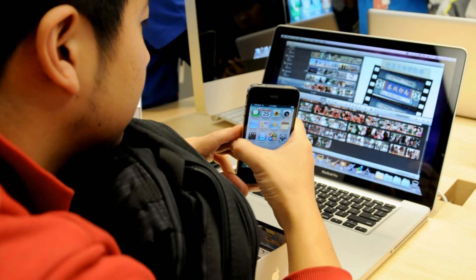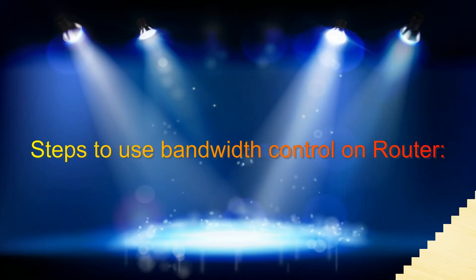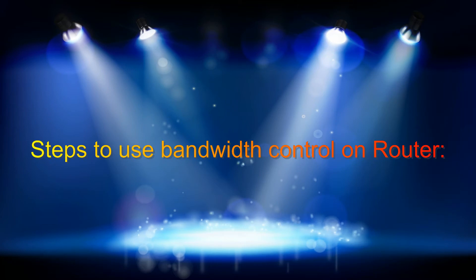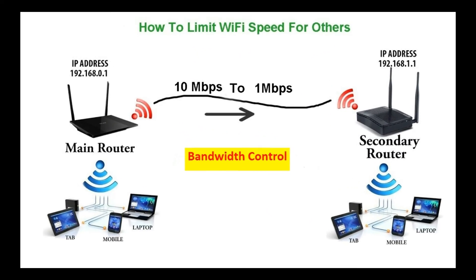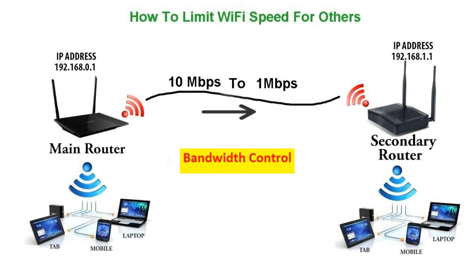When multiple wireless devices like computers, mobiles, and laptops are connected to a Wi-Fi router, you can face some issues — you can get slow internet or slow Wi-Fi connection. There is a solution for this: router bandwidth control. In my case, I am using a TP-Link Wi-Fi router. When you have access to TP-Link Wi-Fi router settings, you can control the bandwidth for all devices connected to your router.